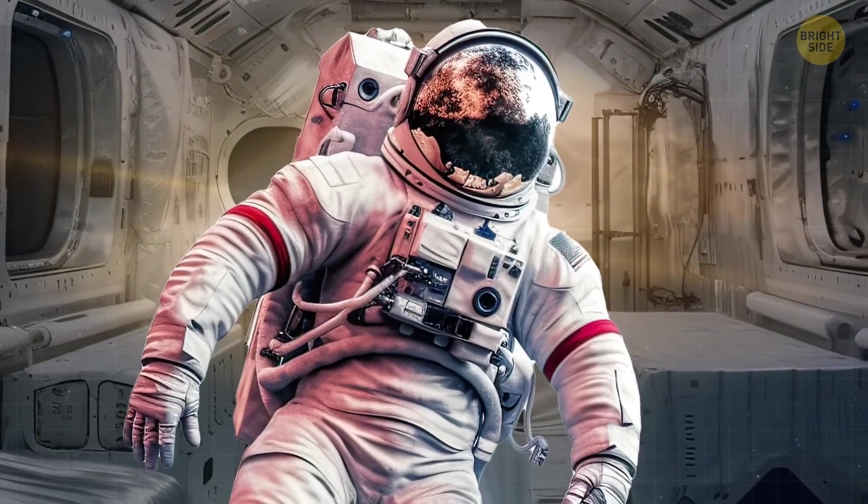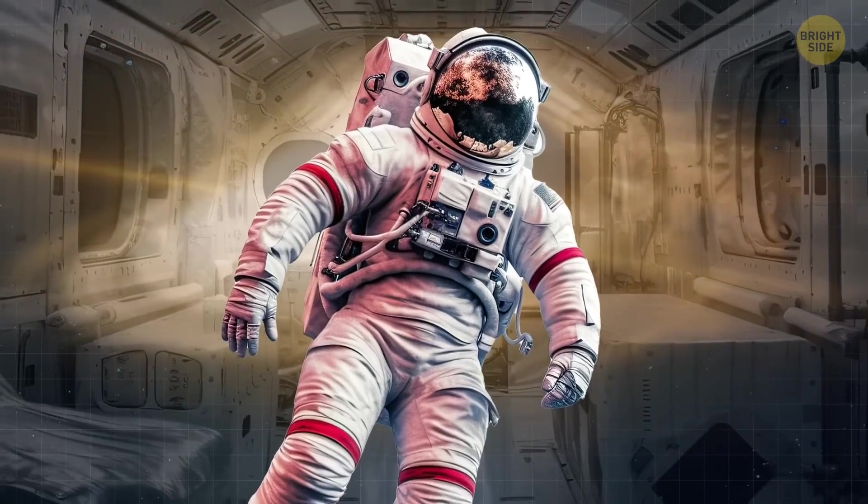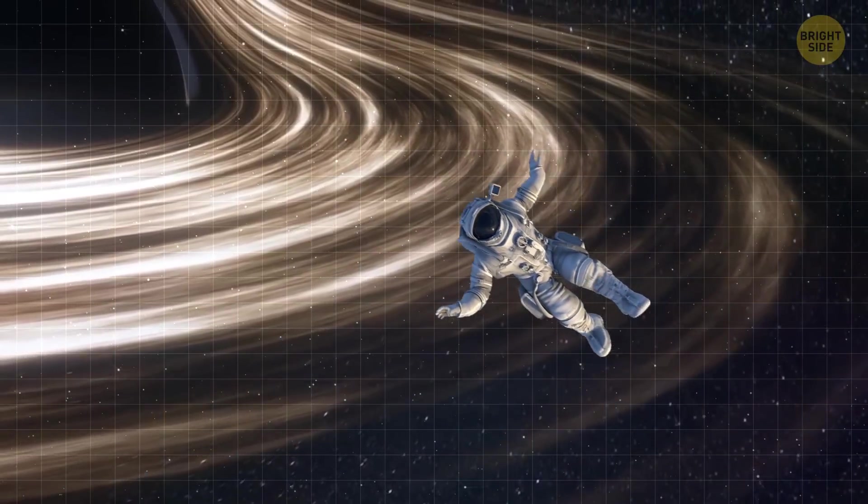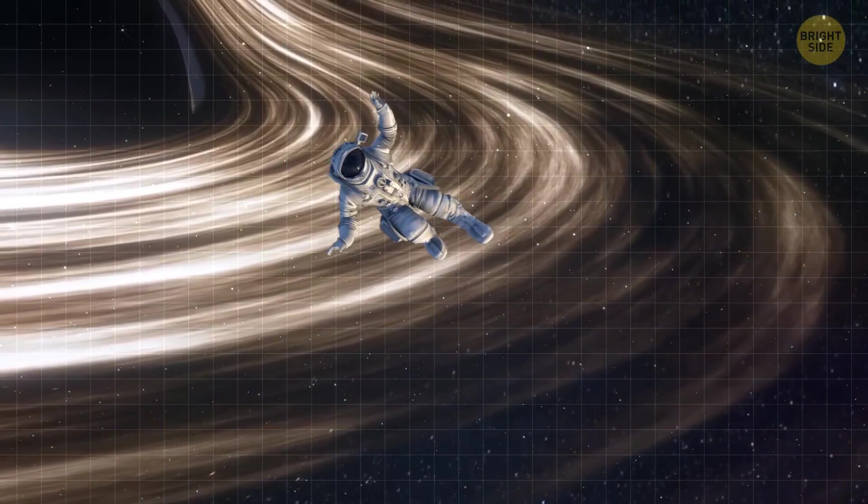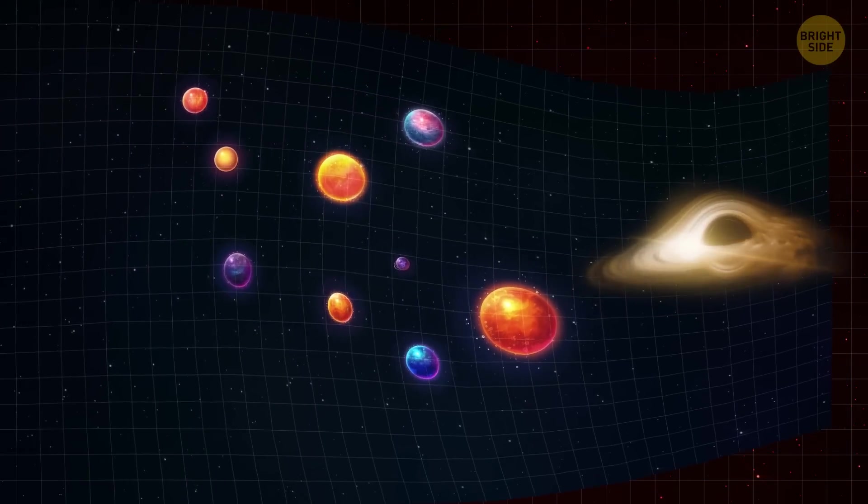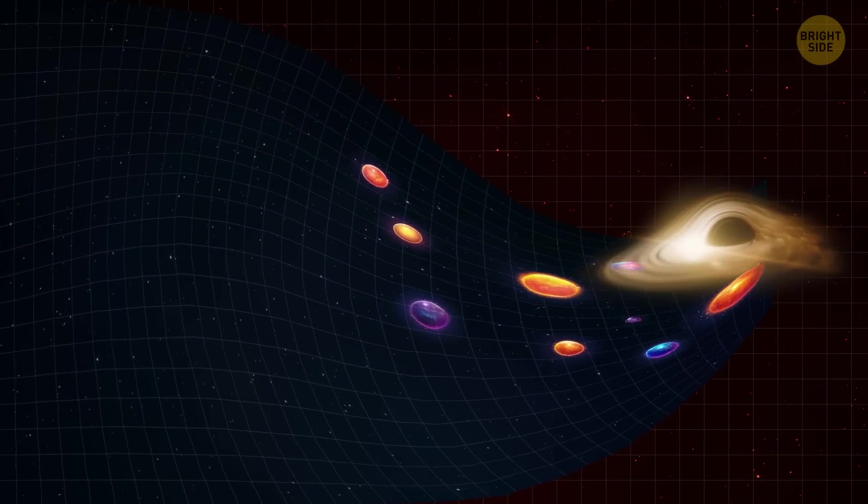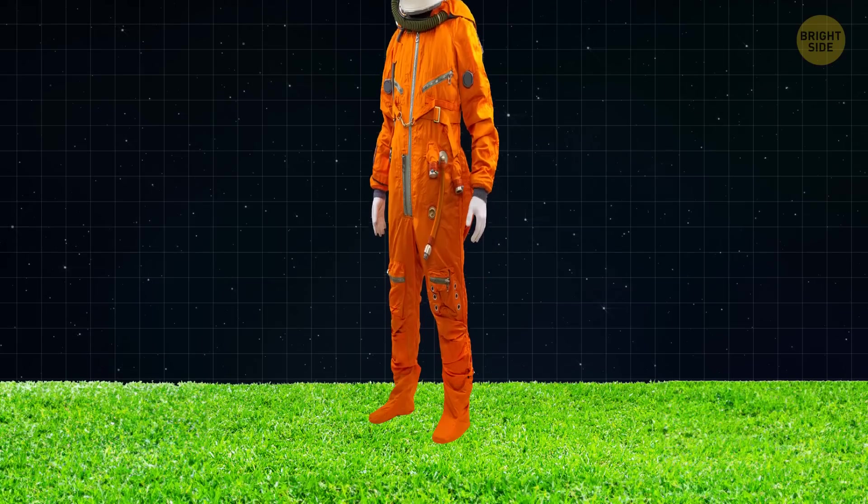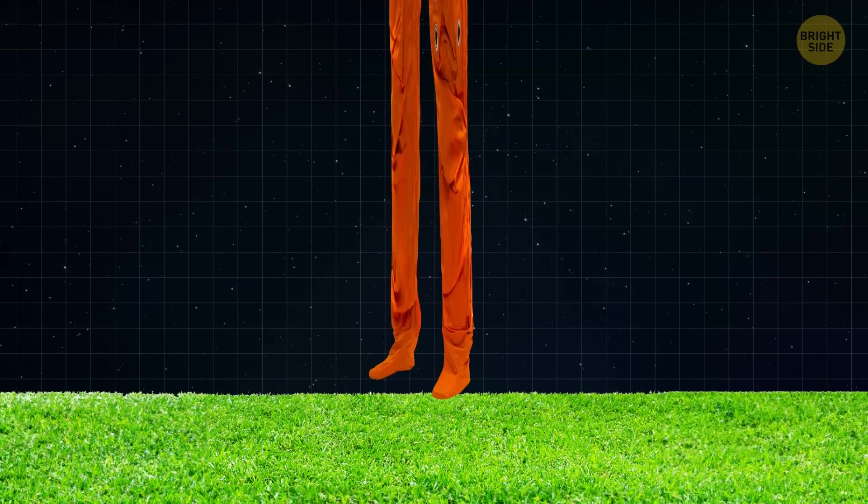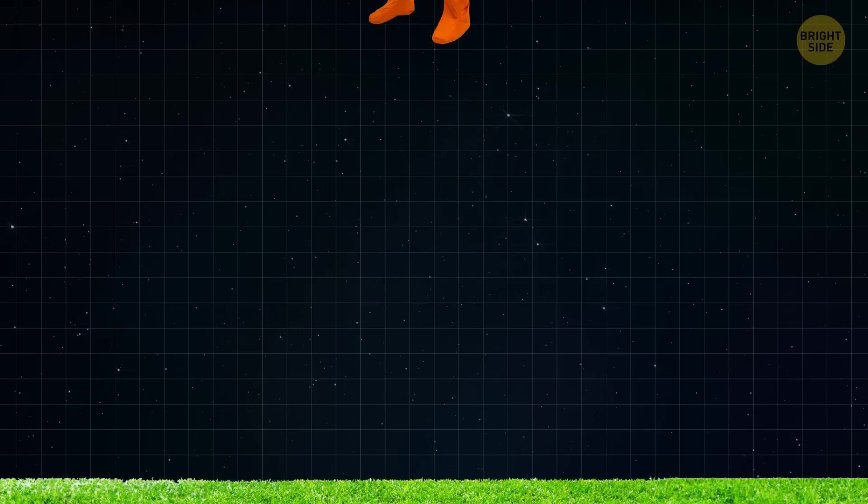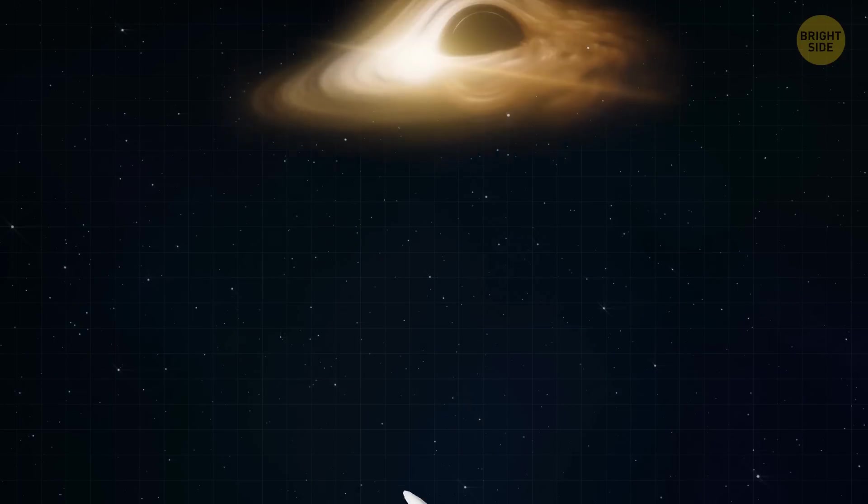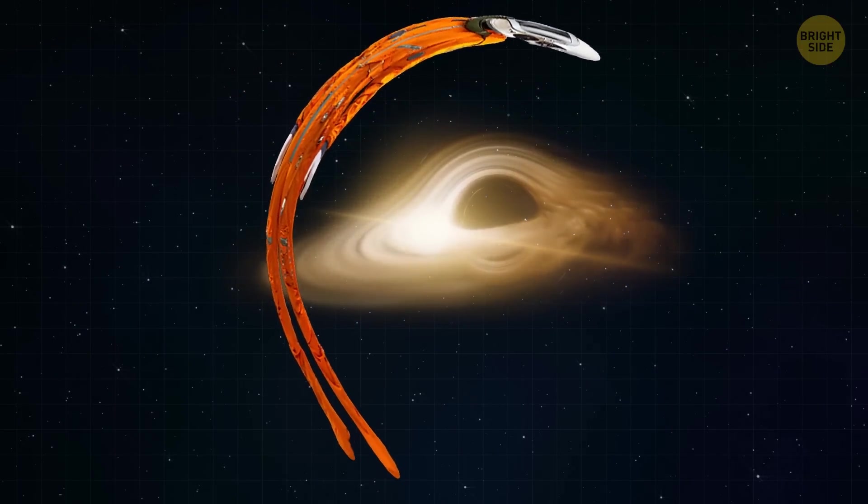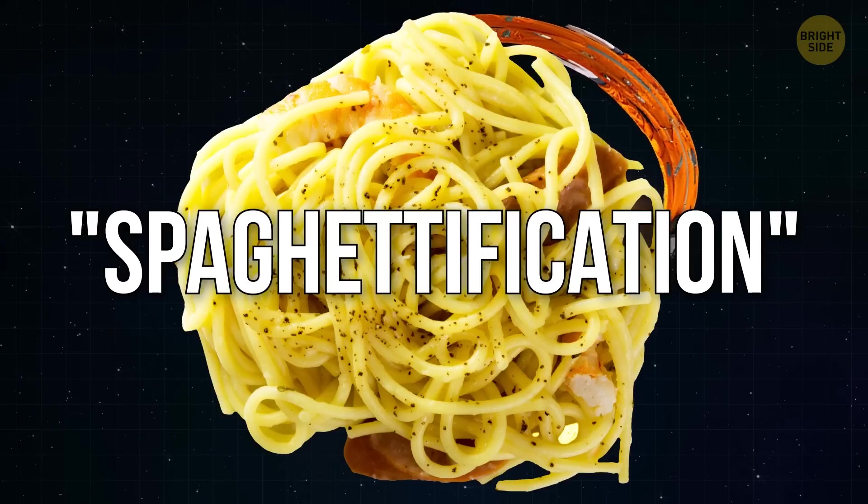As you get closer to the black hole, something really weird starts happening. The gravity near the black hole is so powerful that it stretches and warps everything around it. So, the difference in gravitational pull between your head and feet becomes significant. This difference creates a tidal force, which stretches your body like a long, thin shape. It's a process that's scientifically called spaghettification.